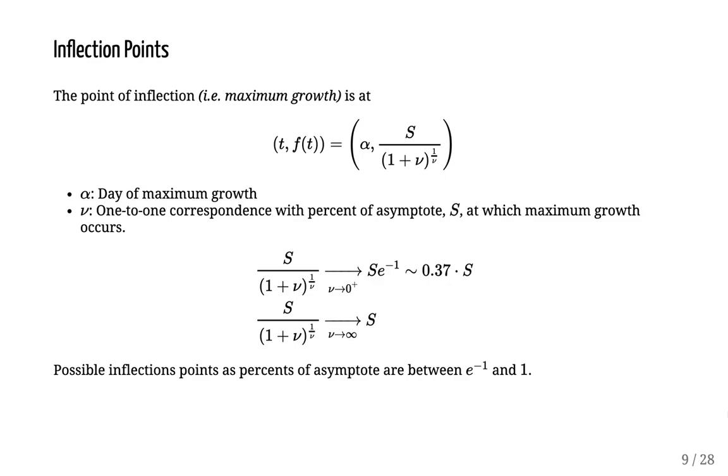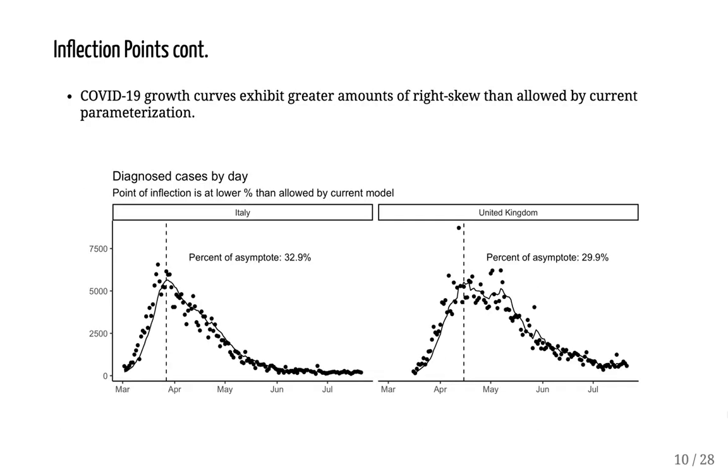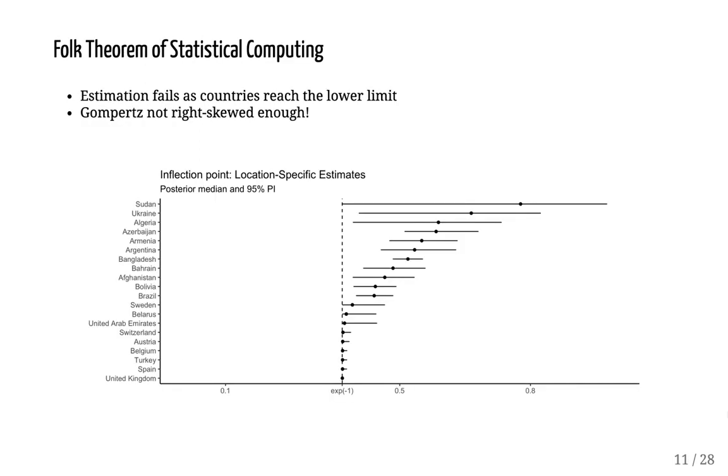This tells us that we cannot have growth curves that are more skewed than the Gompertz model. And this turned out to be a problem as time went on and we saw data coming in.